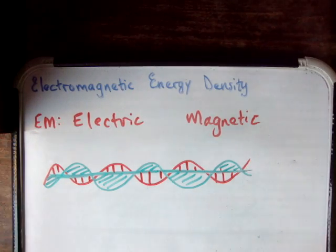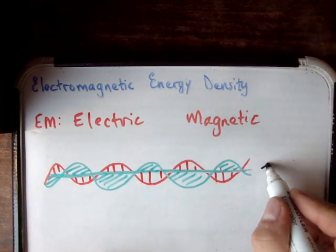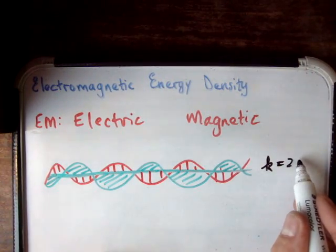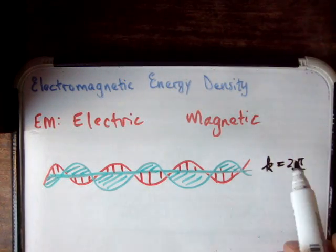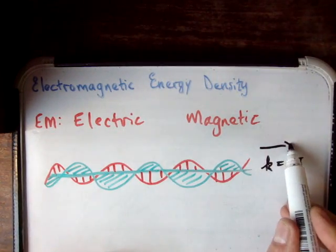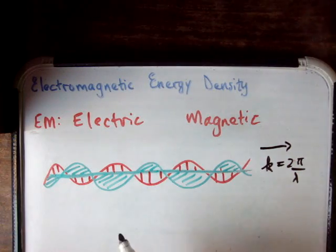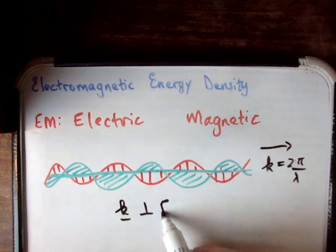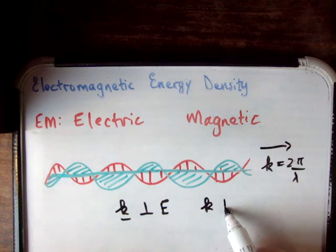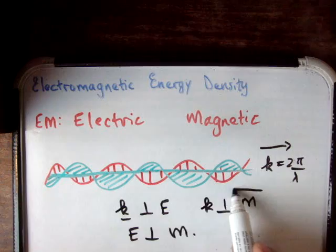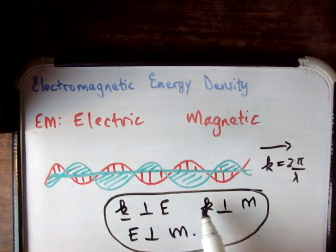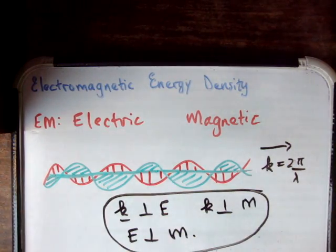Just as an aside, the wave number k equals 2π over λ. In three-dimensional space it becomes a vector, and the wave number gives you the direction of propagation of your wave. So your wave vector is perpendicular to your electric field, perpendicular to your magnetic field, and your electric field is perpendicular to your magnetic field.